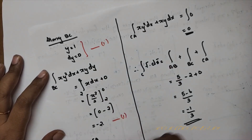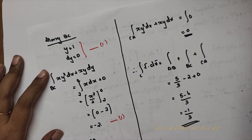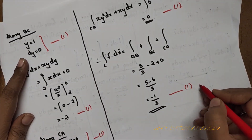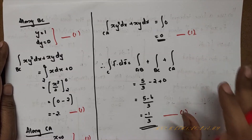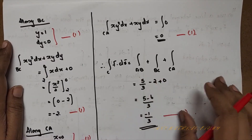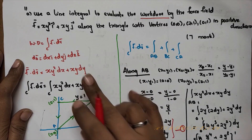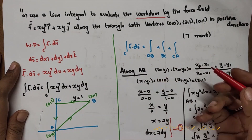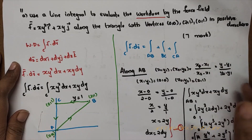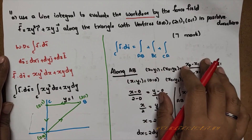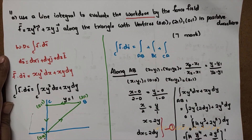To summarize: along AB, x = 2y and dx = 2dy giving 5/3; along BC, y = 1 and dy = 0 giving −2; along CA, the integral is 0. Split the path into AB, BC, CA to get the final answer.